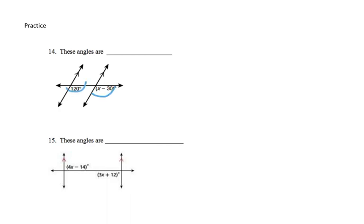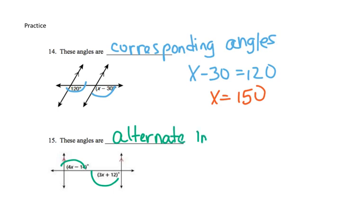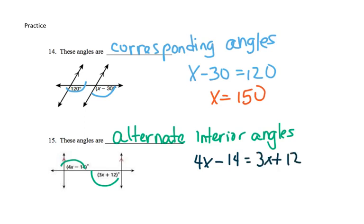For number 14, 120 and x minus 30 are corresponding angles. We set them equal: x minus 30 equals 120. Add 30 to both sides, and x equals 150. For number 15, 4x minus 14 and 3x plus 12 are alternate interior angles, so we set them equal: 4x minus 14 equals 3x plus 12. Subtract 3x from both sides to get x minus 14 equals 12. Add 14 to both sides, and x equals 26.